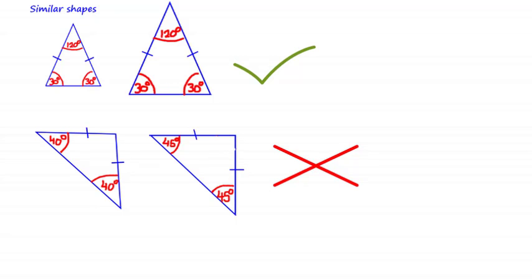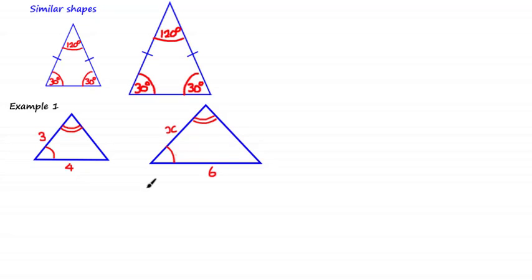In some questions you'll be given the fact that the shapes are similar, but in other questions you may have to figure this out yourself by checking that all corresponding angles are equal. Looking at these triangles, we can say that these two angles are equal because they've both been drawn with a single arc, and these two angles are equal because they've both been drawn with two arcs. As these are triangles and the sum of the three angles in any triangle is 180 degrees, it must mean that the remaining angles are also equal.